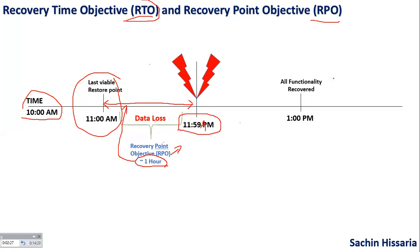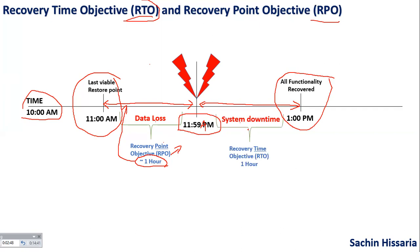Similarly, after disaster, suppose you have recovered all your business around 1 p.m. Between 12 p.m. to 1 p.m., you have not done any business process or any activity during this particular time. So that means this is your system downtime — in this one hour, you are not able to run your business. This is called Recovery Time Objective. So basically, Recovery Time Objective stands for the system downtime and Recovery Point Objective stands for the data loss that has occurred due to disaster.